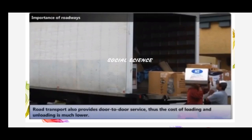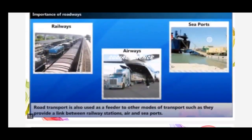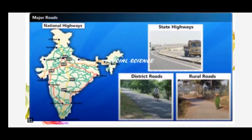Roads are the only transport that feeds the remaining modes of transport. For example, to reach a railway station, airport, or seaport, you need to use roads. Roadways connect and act as a feeder to all remaining modes of transport. In India, roads are classified into six classes according to their capacity.